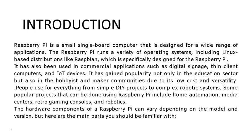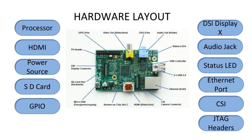People use it for everything from simple DIY projects to complex robotic systems. Some popular projects that can be done using Raspberry Pi include home automation, media centers, retro gaming consoles, and robotics. The hardware components of a Raspberry Pi can vary depending on the model and version, but here are some of the main parts you should be familiar with.